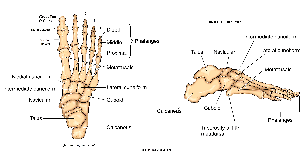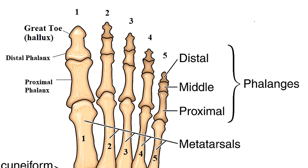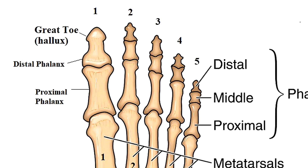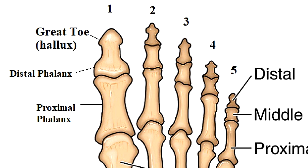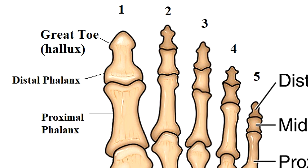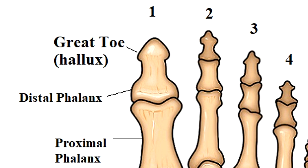Let's start with the toes and work our way back. The bones that make up your toes are called phalanges, just like the finger bones — the singular form is phalanx. There are three phalanges for each toe except for the big toe, also called the great toe or the hallux, which has only two phalanges: a distal and a proximal phalanx.